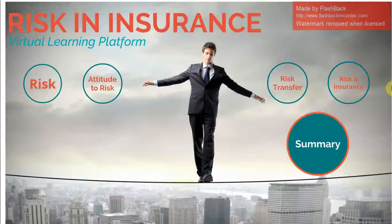Make a list of features of a house, its occupants, and location that you believe would mean that the risk of fire, flood, theft, and escape of water is lower. Now make a list of features that you would expect to make the risk of the same things higher.